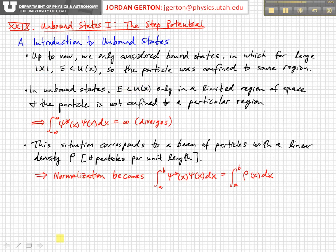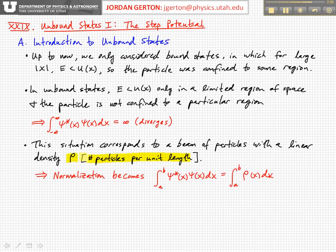This general situation corresponds in a general way to a beam of particles with a number of particles per unit length — in one dimension we'll call that rho. Usually we reserve rho for mass per unit length or mass per unit volume, but here we're going to designate rho as the number of particles per unit length, since we're talking about one dimension.